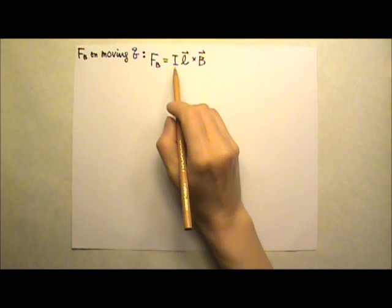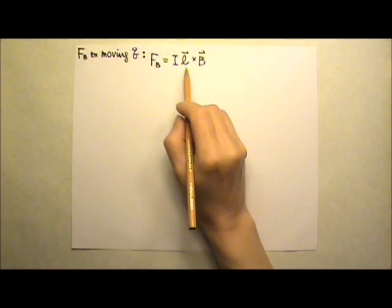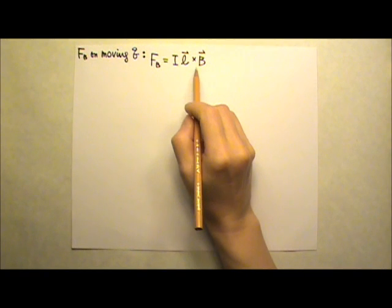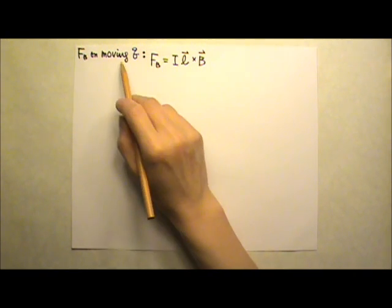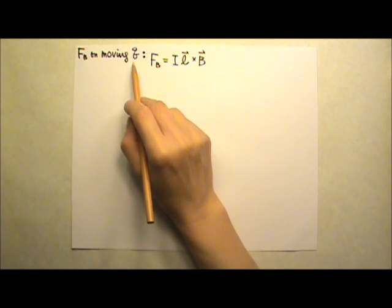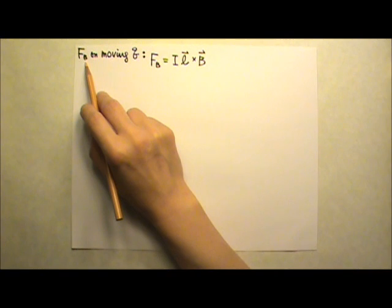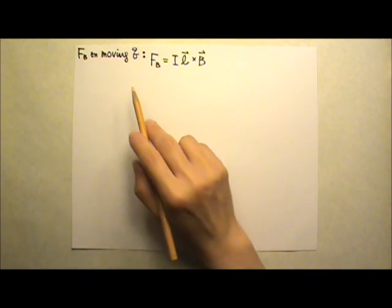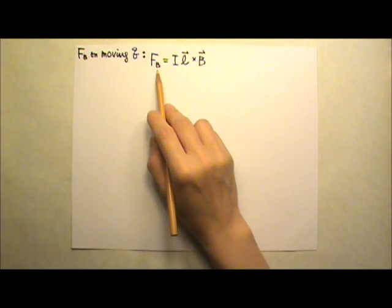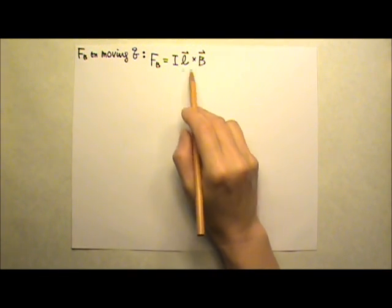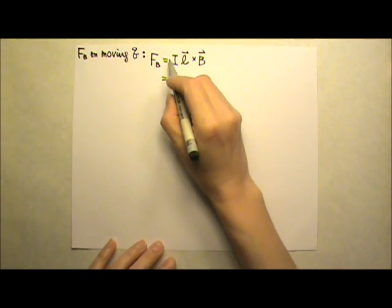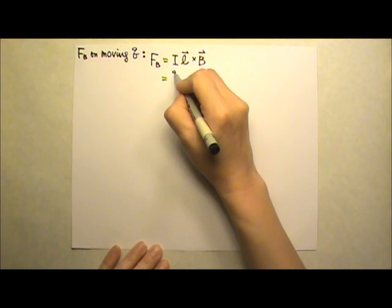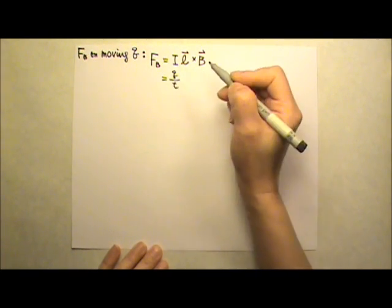We have learned that an electric current in a magnetic field can experience a magnetic force. The current is basically flowing moving charges, so moving charges should experience magnetic force as well. To find the magnetic force on a moving charge, we can start with the equation I times L cross B, because the definition for electric current is charge flow per unit time.